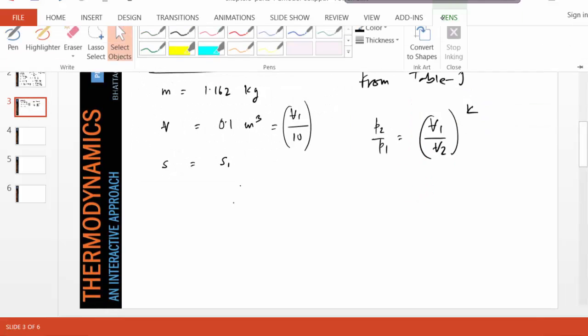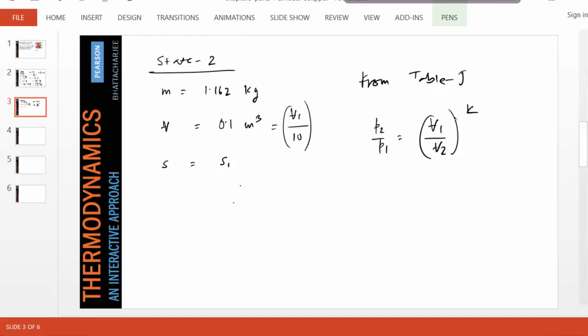So we come back and we notice that P2 over P1, from this equation, we can find P2 to be P1 times V1 over V2, which is 10. So it's 100 kPa into 10 to the power 1.4. And that's 2512 kPa. So we found the final pressure.